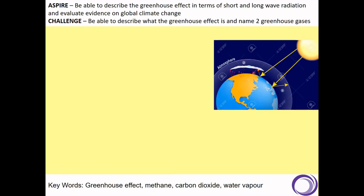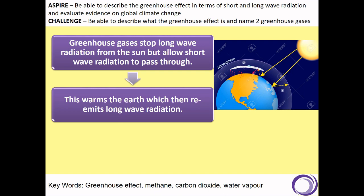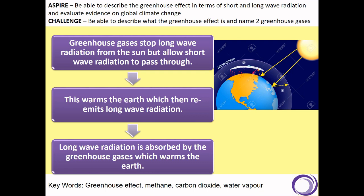There are lots of different wavelengths of radiation travelling through space, some of which are emitted from our sun, but we're going to group them and talk about just shortwave and longwave radiation. Greenhouse gases stop longwave radiation from the sun being transmitted through the atmosphere, but allow shortwave radiation to pass through. That shortwave radiation has a warming effect on the surface of the earth, which will then re-emit longwave radiation. The longwave radiation is absorbed by those greenhouse gases again and is not transmitted, which has an overall warming effect on the earth.